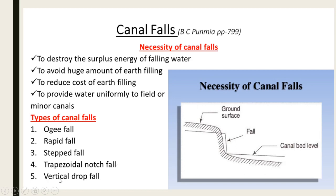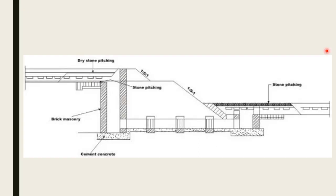Siphon well drop comes under the vertical drop fall type of canal fall. As the name indicates, it is a kind of canal fall with wells included for the purpose of destroying surplus energy of water. In a well drop there will be two kinds of wells: the inlet well and the outlet well, connected by a pipe.